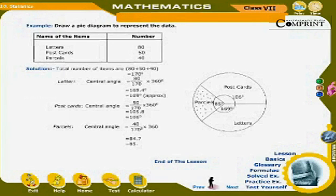Parcels: Central angle is equal to 40 upon 170 into 360, which is equal to 84.7, which is equal to 85.